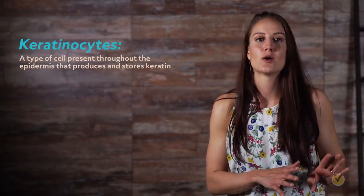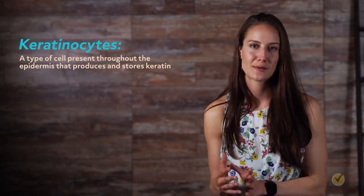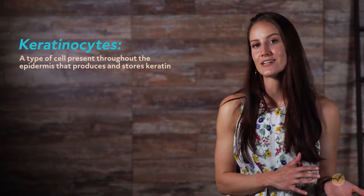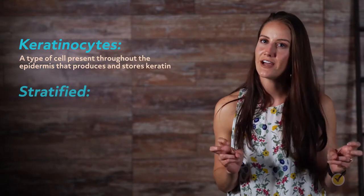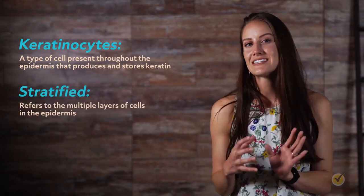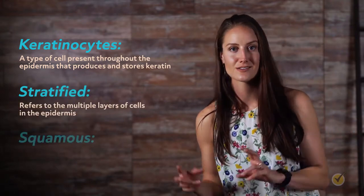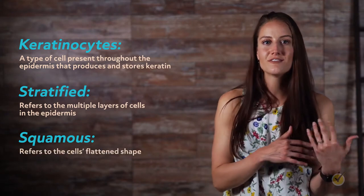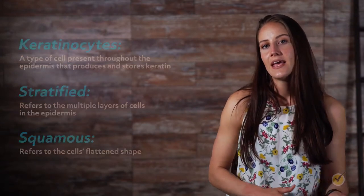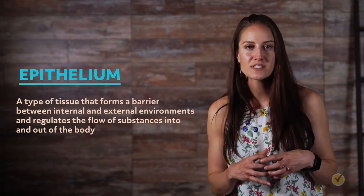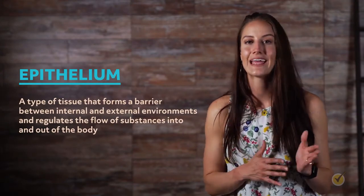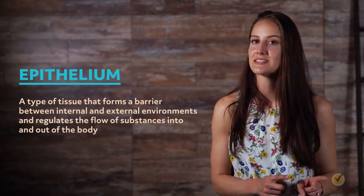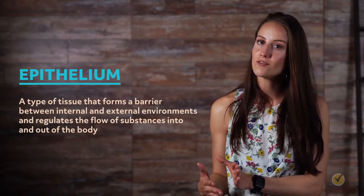Keratinocytes are a type of cell present throughout the epidermis that produces and stores keratin, which is a protein that gives skin, hair, and nails their hardness and ability to resist water. Stratified refers to the multiple layers of cells in the epidermis, and squamous refers to the cell's flattened shape. An epithelium is a type of tissue that forms a barrier between the internal and external environments, and regulates the flow of substances into and out of the body.